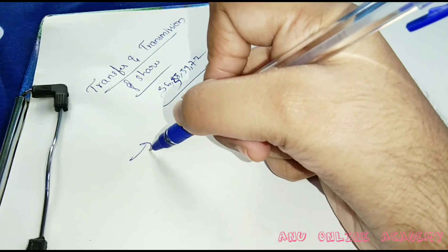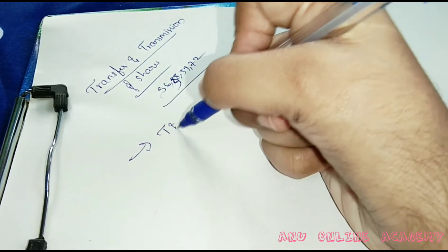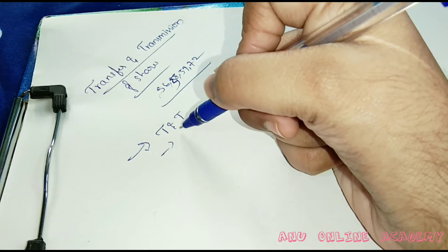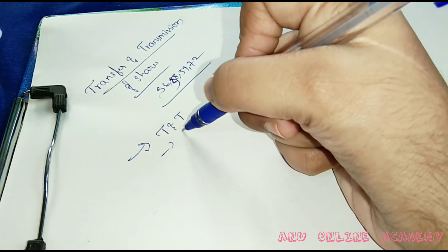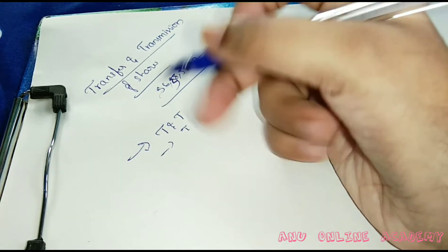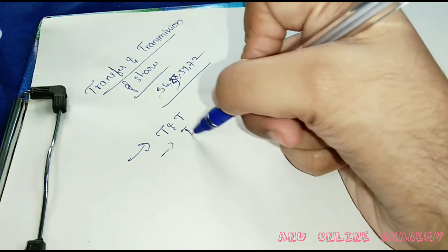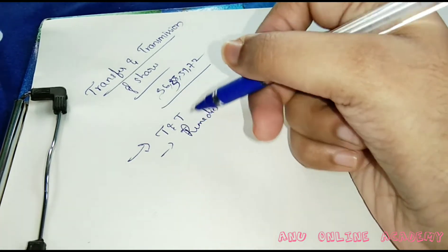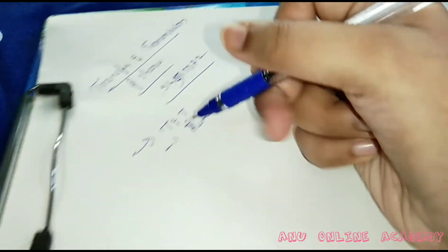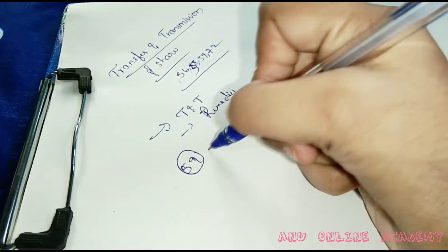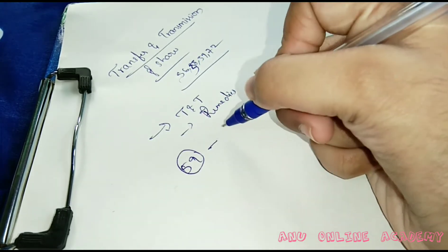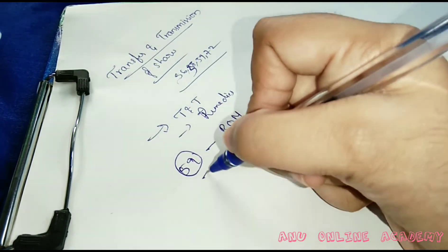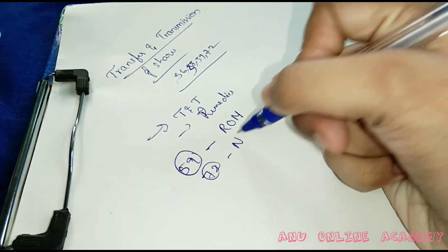The main sections cover transfer and transmission, remedies available to the transferee when the company refuses to register, section 59 on rectification of register of members, and section 72 on nominations.